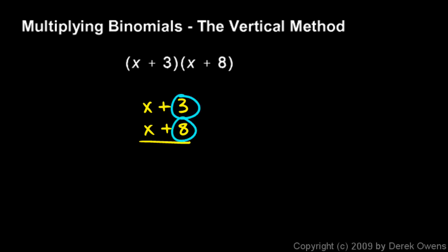I'm going to start by multiplying 8 times 3 and that gives me 24, so I'll write that down there. Then I multiply 8 times x and that gives me 8x, so I'll write it here like this: 8x plus 24.